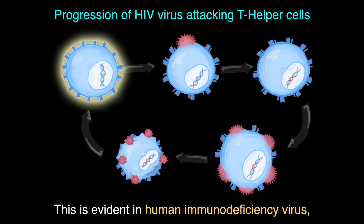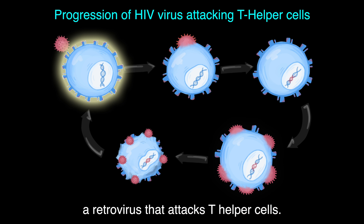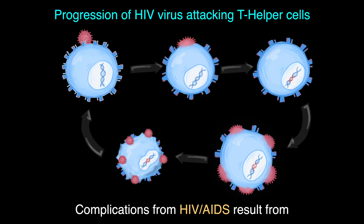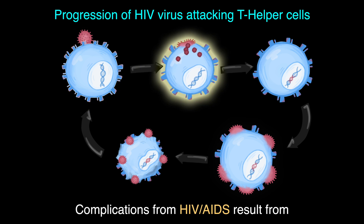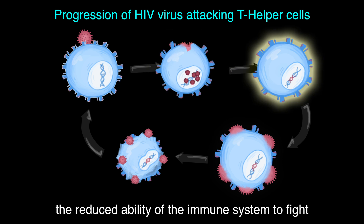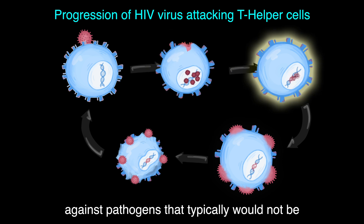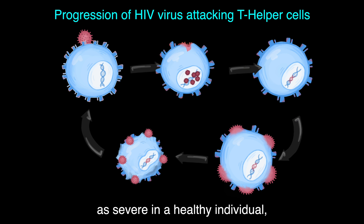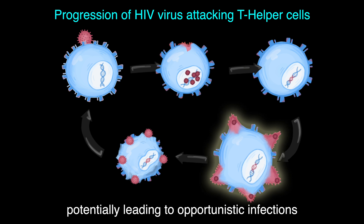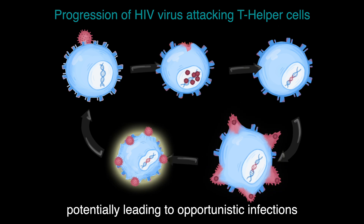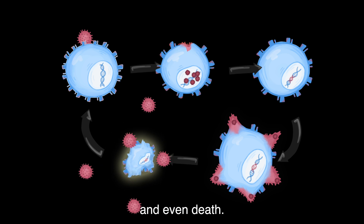This is evident in human immunodeficiency virus, a retrovirus that attacks T helper cells. Complications from HIV-AIDS result from the reduced ability of the immune system to fight against pathogens that typically would not be as severe in a healthy individual, potentially leading to opportunistic infections and even death.